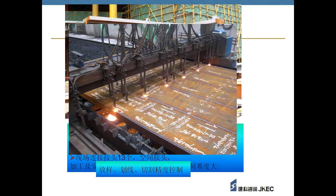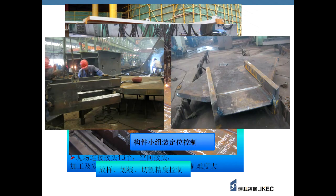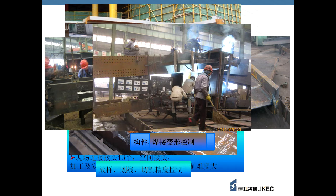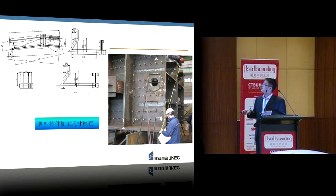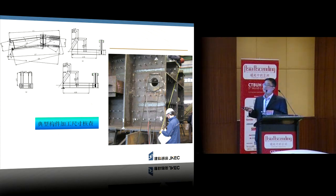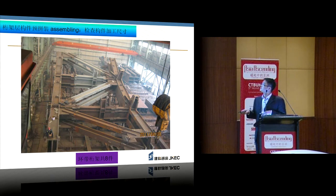To ensure precision meets requirements, we implement controls in the manufacturing plant: cutting precision control, alignment checking during assembly, and control for thermal expansion and contraction deformation during welding. We recheck size and position to confirm they meet requirements. Because the structure is complicated, multi-angle inspection is needed, sometimes taking a long time. We conduct three-dimensional size checking to ensure the manufacturing position is exactly what we want.